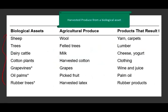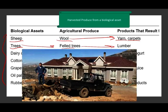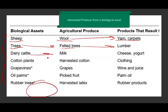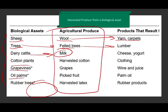Here are some examples of biological assets: sheep — you get wool, which can eventually become yarn and carpet; felled trees — you can turn them into lumber. I have a picture from the mountains of Lebanon where I was helping my brother clear land and plant cherry trees. Other examples include dairy cattle producing milk, cotton plants, and grapevines — all biological assets. Agricultural produce is what is harvested from them.